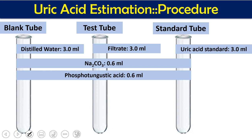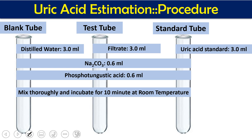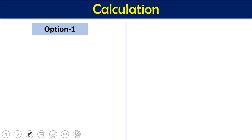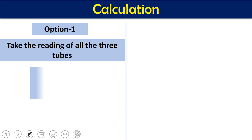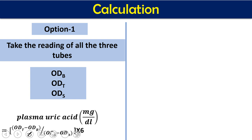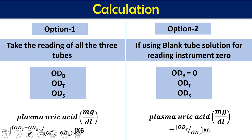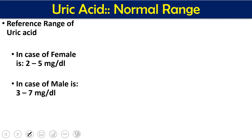To all three tubes add 0.6 ml sodium carbonate and 0.6 ml phosphotungstic acid. Mix thoroughly and incubate for 10 minutes at room temperature. Then measure optical density using a green filter or 710 nm on a spectrophotometer. Option 1 (all three ODs): (OD_T − OD_B) / (OD_S − OD_B) × standard concentration (1 or 6 mg/dL). Option 2 (blank zeroed): OD_T / OD_S × standard concentration.